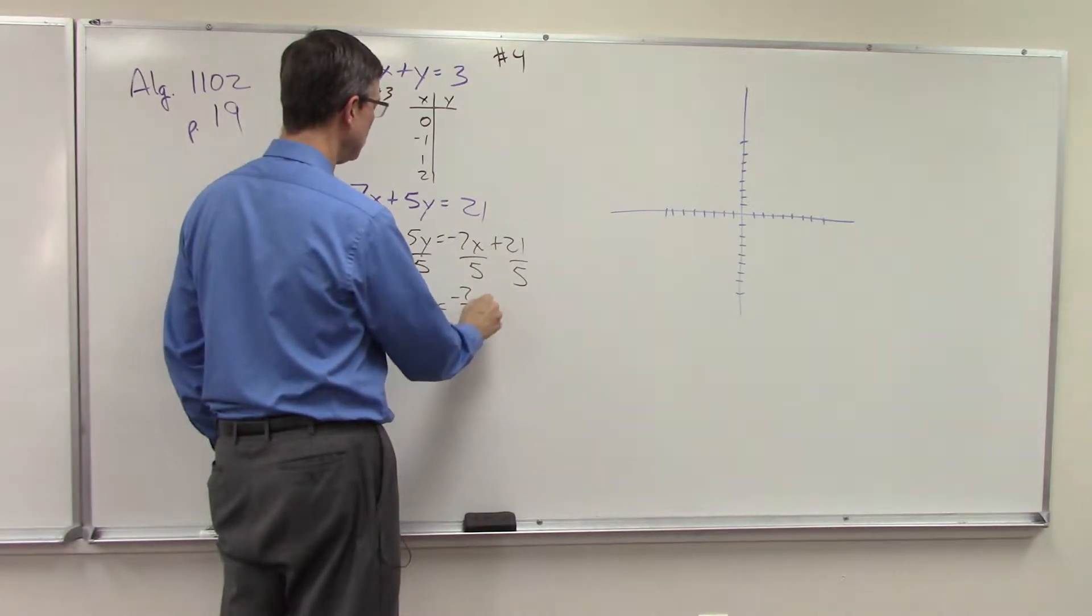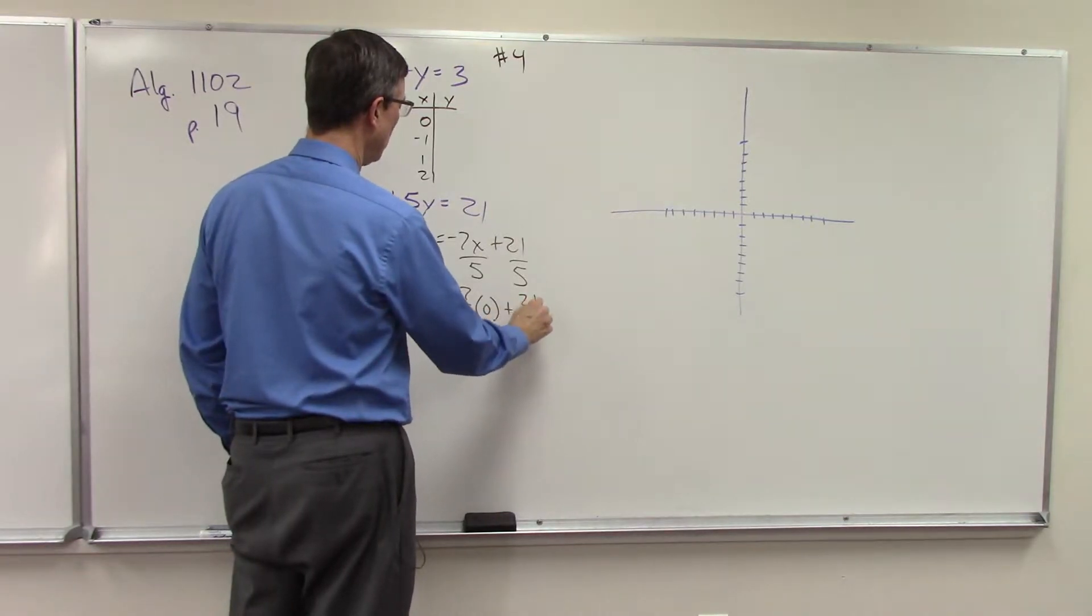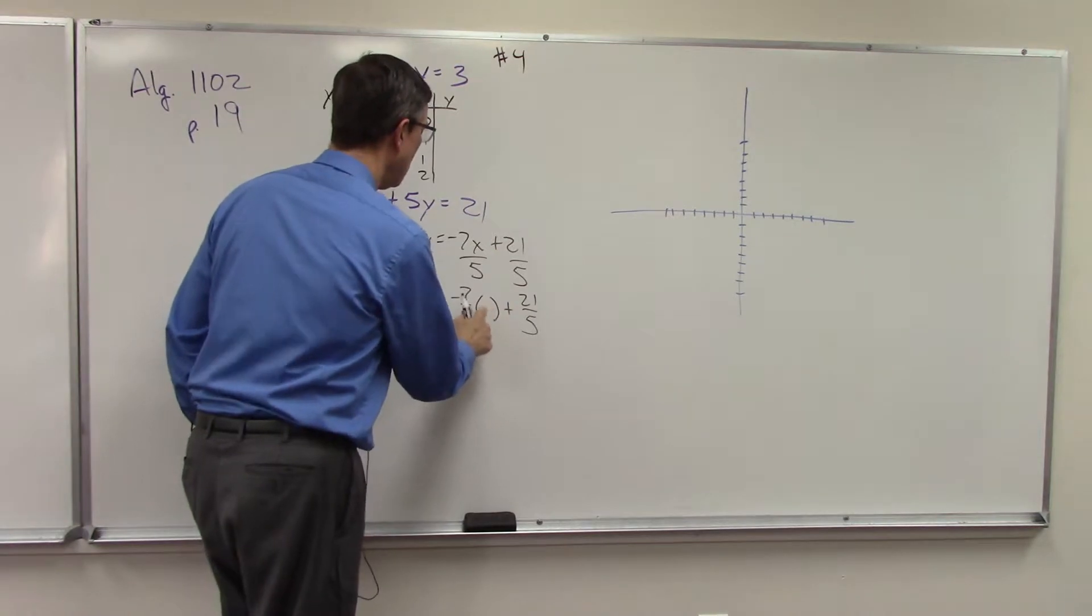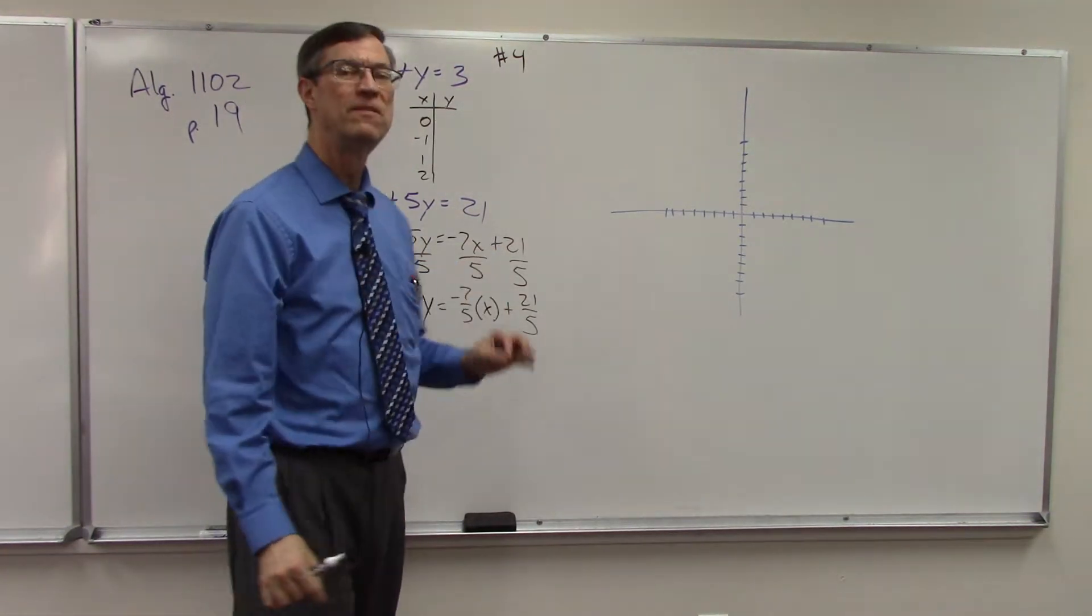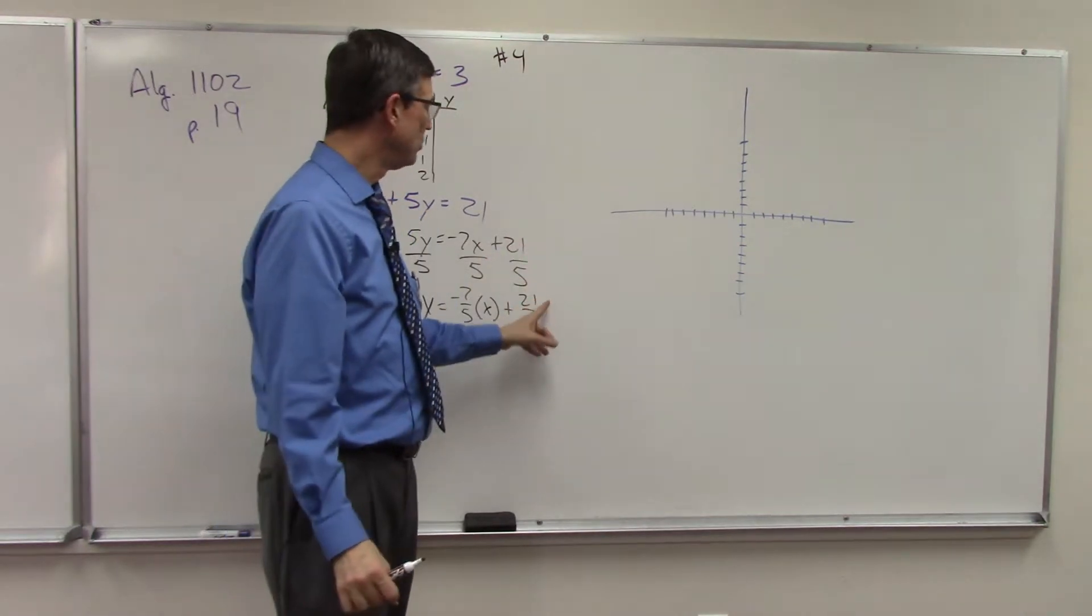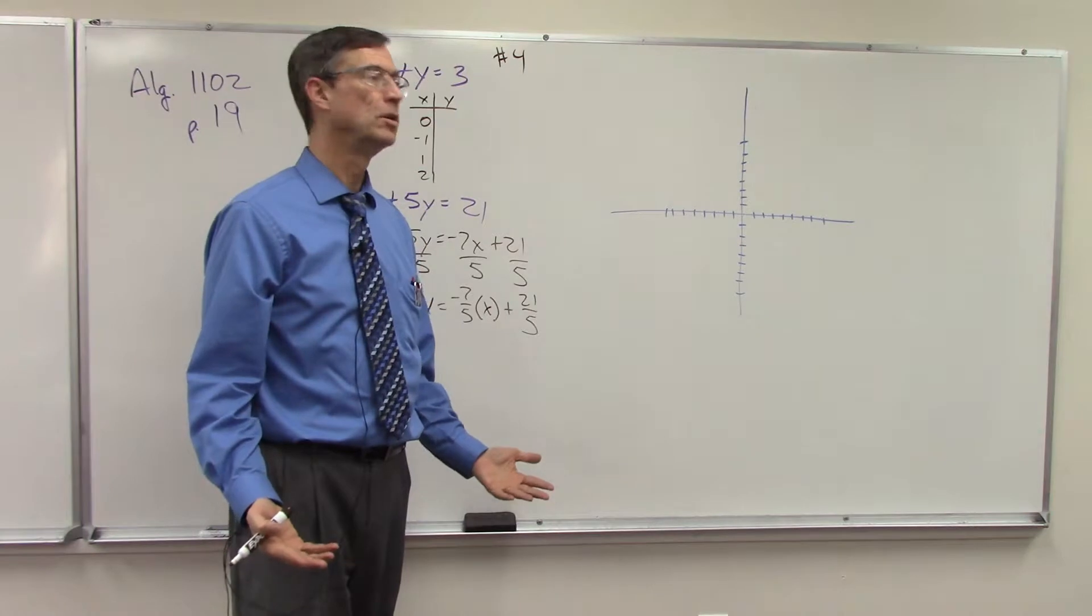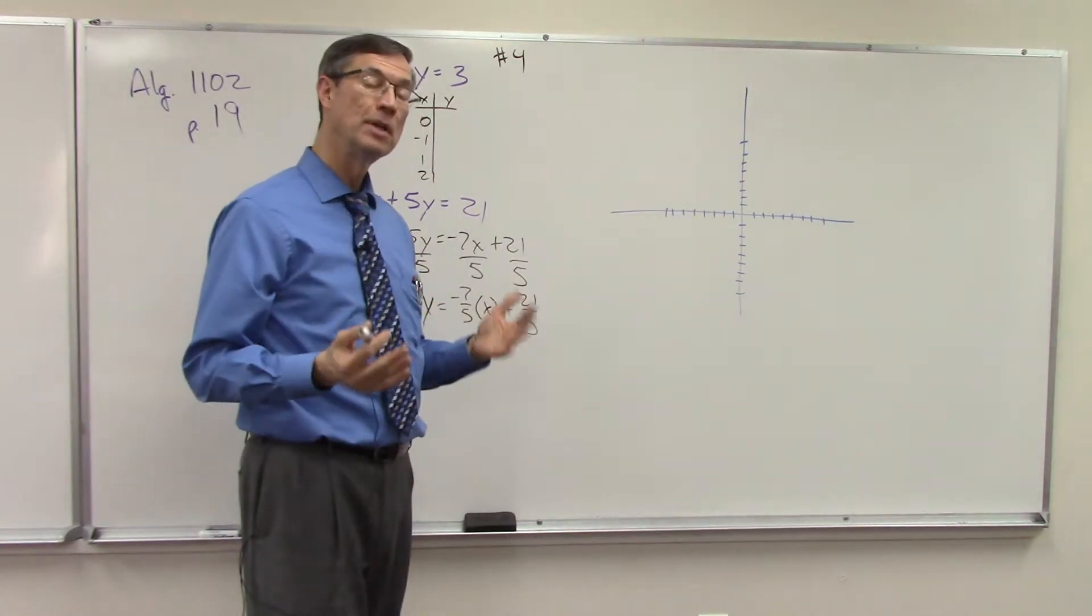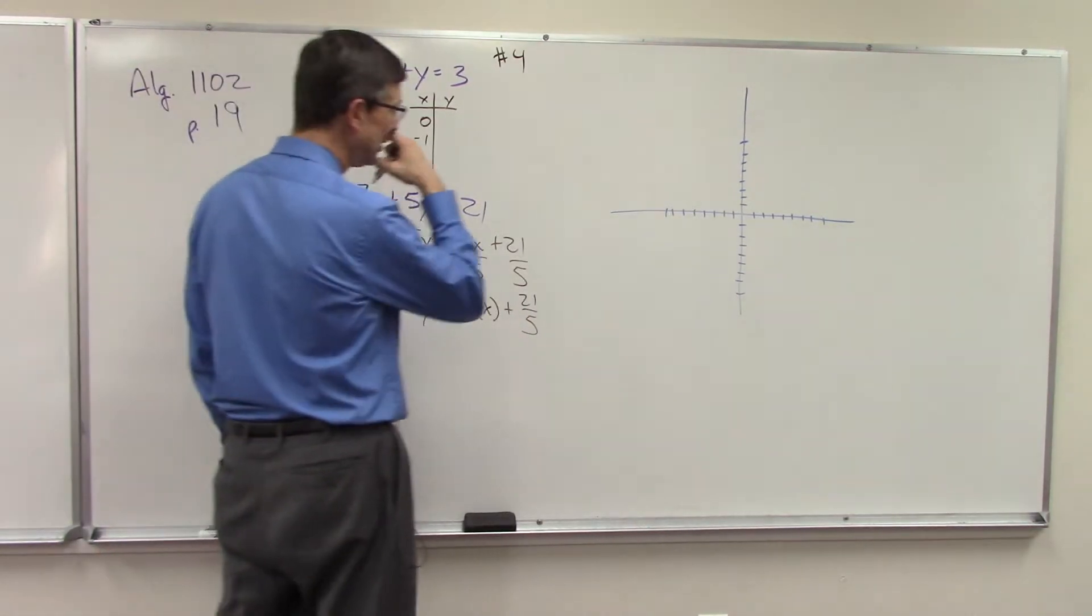So we end up with this fraction, negative 7 fifths, excuse me, negative 7 fifths x plus 21 fifths. So there's really, on this particular problem, there's no way to avoid it. We have to deal with fractions. I am going to give you a tip that's going to help you. So we're going to come up with some values.